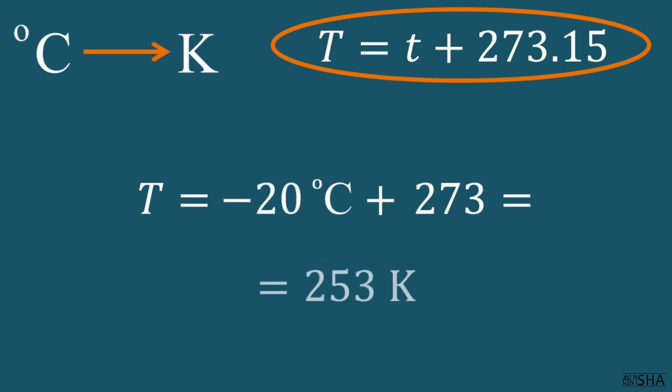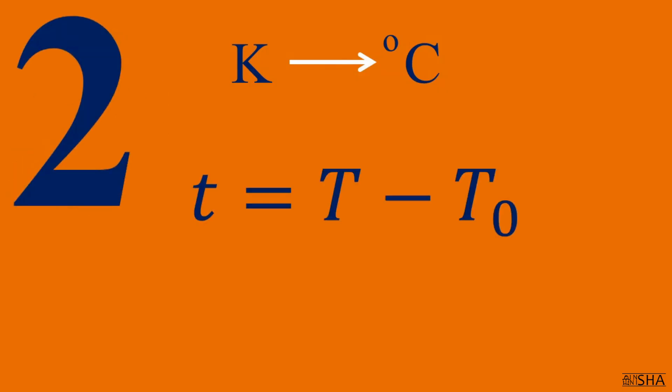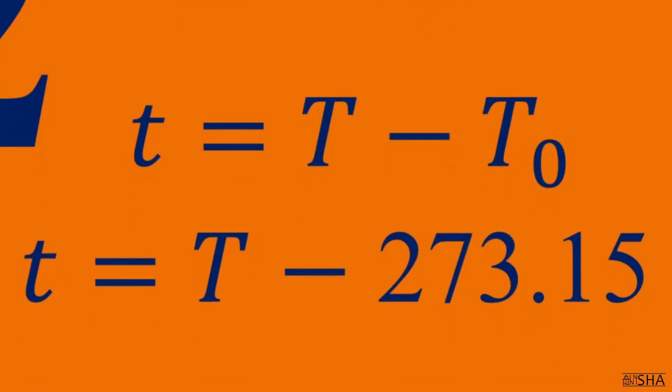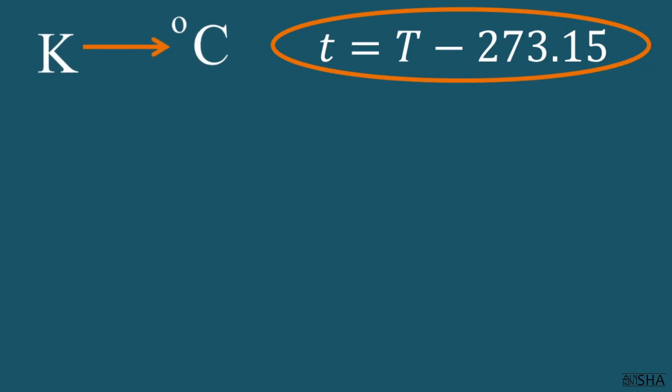Now, on the contrary, we will convert Kelvin to degrees Celsius. We take the second formula and put the corresponding values. t (small) is equal to 300 minus 273.15, it equals 26.85 degrees Celsius. Approximately, it's 27 degrees.